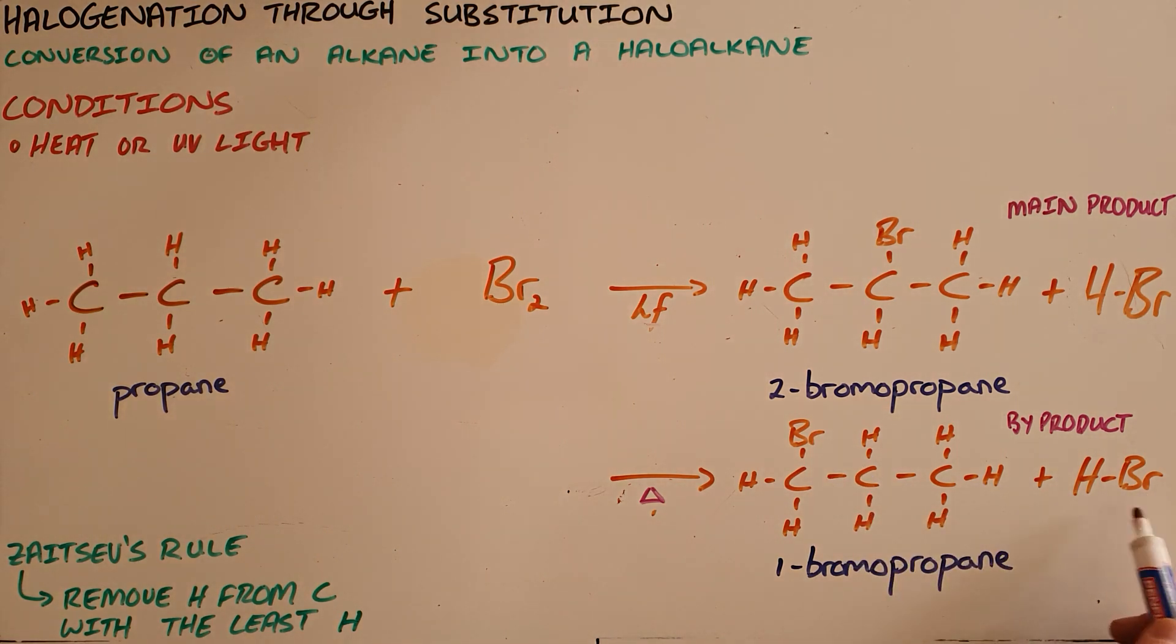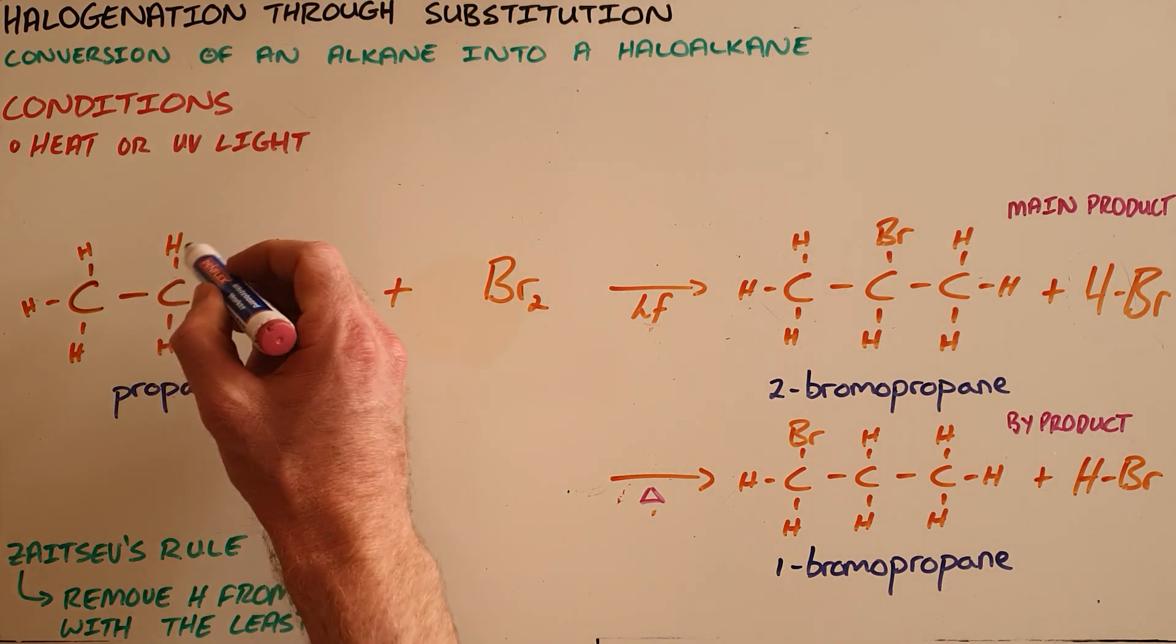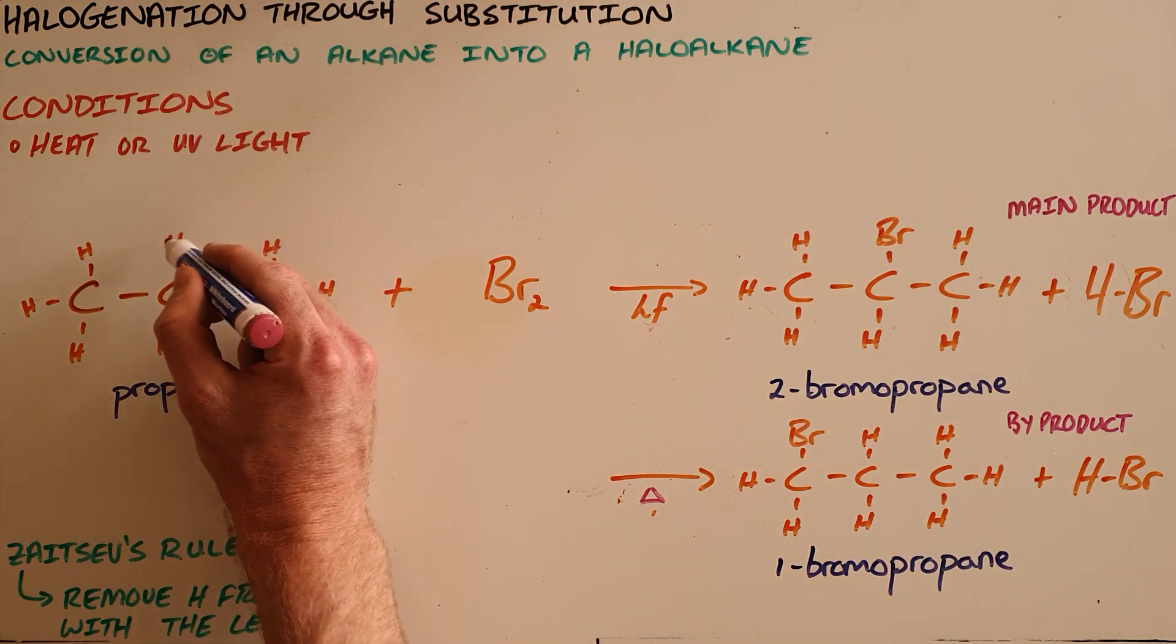To determine which is the main product, we use Zaitsev's rule, which tells us that we will always remove a hydrogen from the carbon that has the least or the fewest hydrogens, which means that we are always going to remove, in this case, from the second carbon.